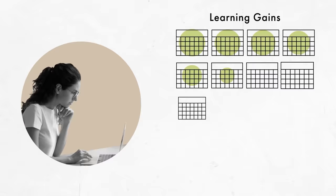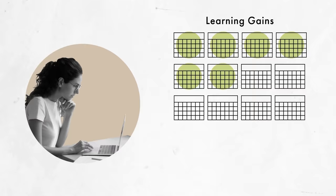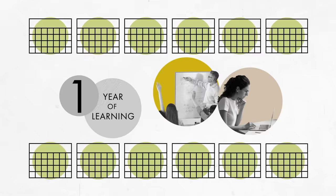The least effective teachers are getting half a year of learning gains. So the difference is a full year of learning each academic year, depending upon which teacher you happen to get as a student.